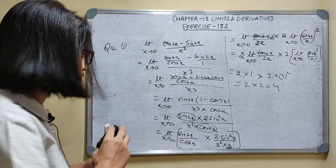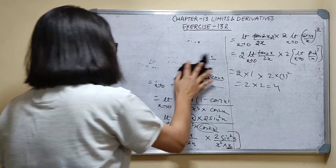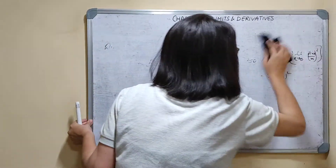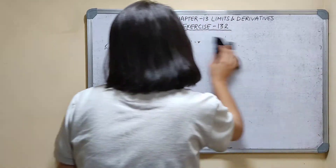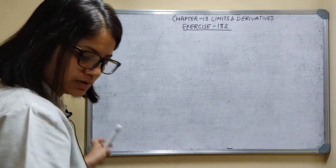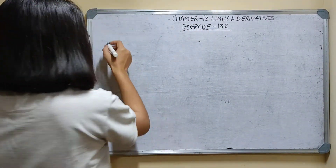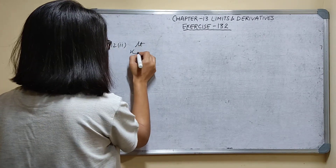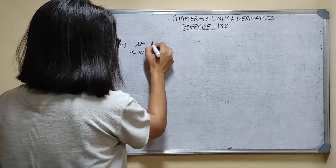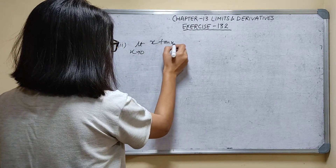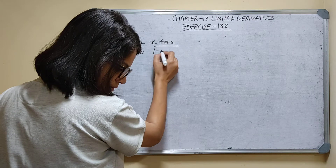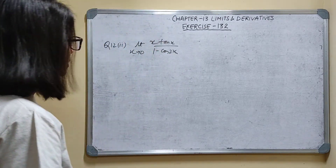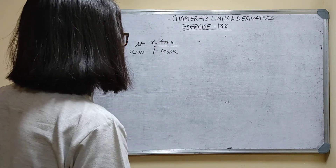Now question number 12, second part: limit x tends to 0 of x tan x upon (1 minus cos 2x).